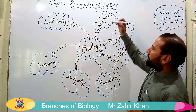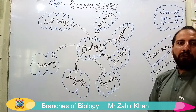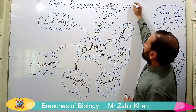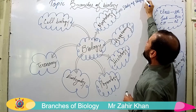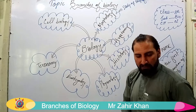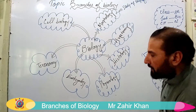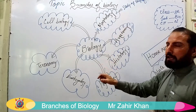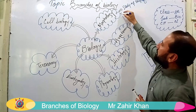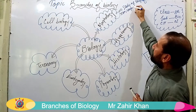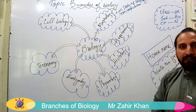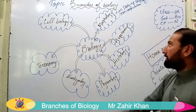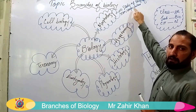The first branch of biology is morphology. Morphology can be defined as the study of shape, size, and external structure of an organism. Morphology is the branch of biology which deals with the external appearance of organisms — including the size, shape, and color of organisms.